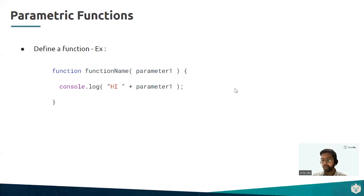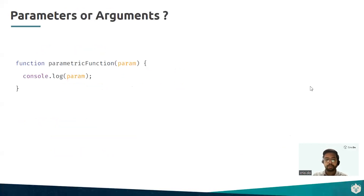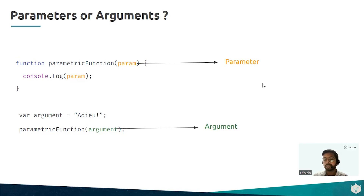Parameters are a mechanism to give inputs to the function. In the non-parametric case, since the message was fixed, no parameters were needed. In the parametric case, we pass different inputs to get personalized messages. Name is a parameter declared during the function declaration. The value passed when calling the function — 'Rahul' — is known as an argument. So parameters are declared, and arguments are the values passed for them when calling the function.